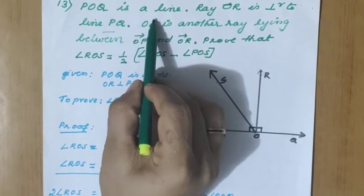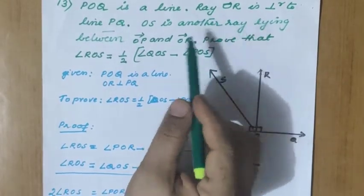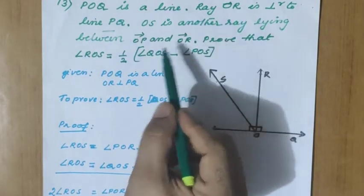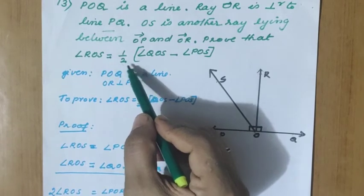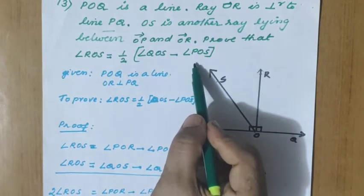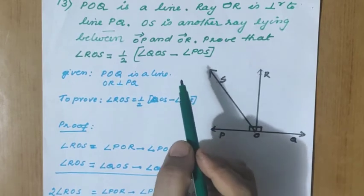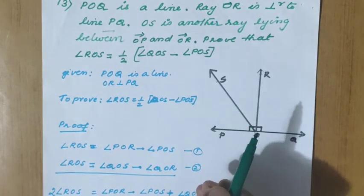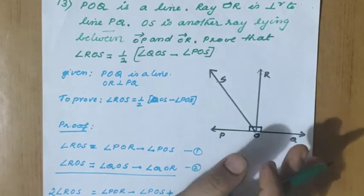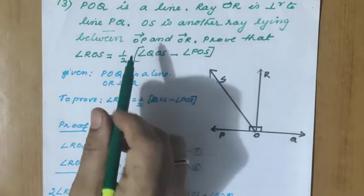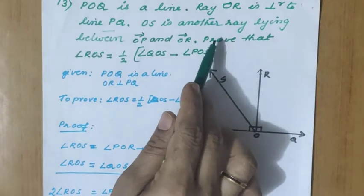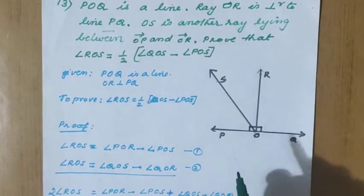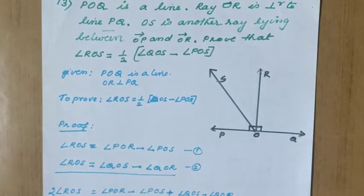Question number 13. POQ is a line. Ray OR is perpendicular to line PQ. OS is another ray lying between OP and OR. Prove that angle ROS equals half into angle QOS minus angle POS. When this question was asked in the PT1 exam, I did not give the diagram. Some children solved it without a diagram. Without a diagram, you will not get any mark, because the positions of S and R are only clear from the diagram. Whenever the diagram is not given in the question, you must draw it and follow the correct steps of a geometrical proof.